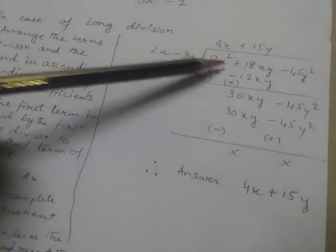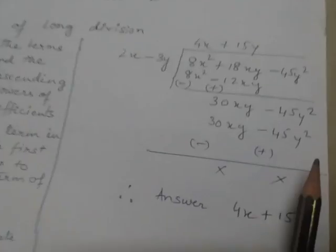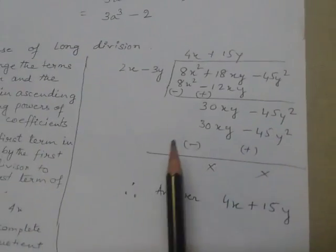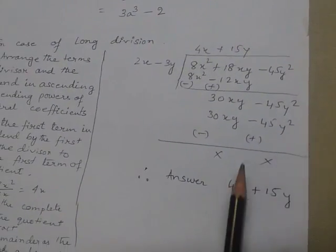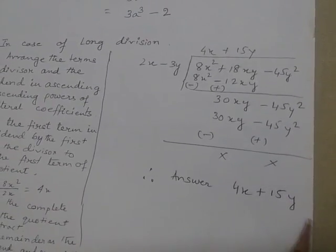Multiply: 15y times 2x equals 30xy, and 15y times -3y equals -45y². Subtracting, both terms cancel. So my quotient is 4x + 15y.